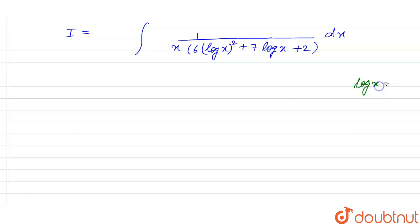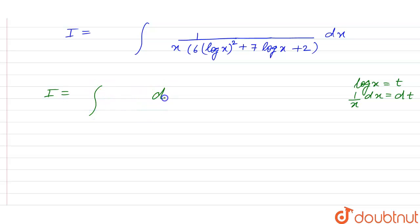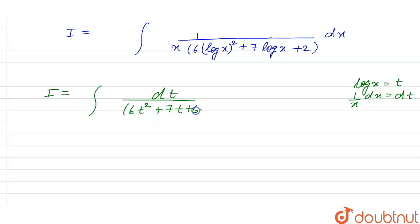Let log x equal to t, so we have 1 by x dx equal to dt. So I will be equal to the integral of dt over 6t squared plus 7t plus 2, since 1 by x dx is dt.